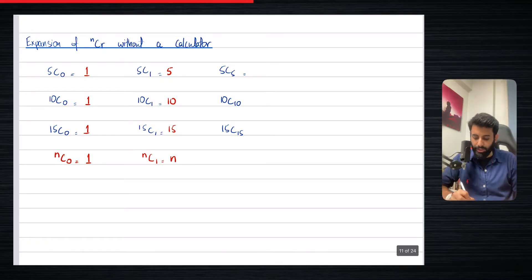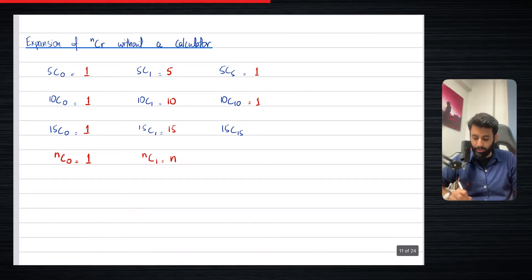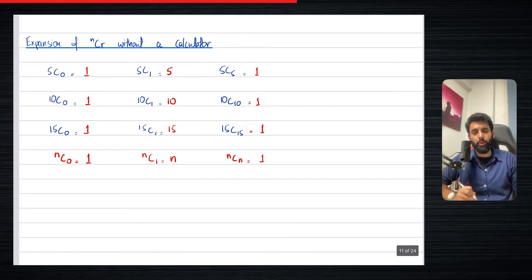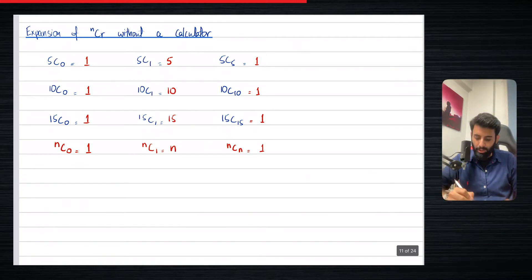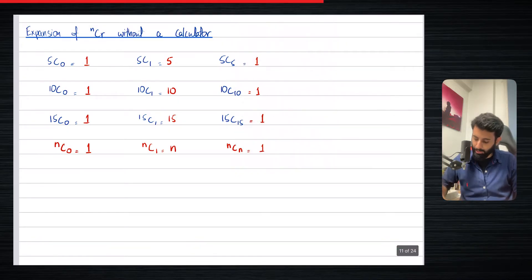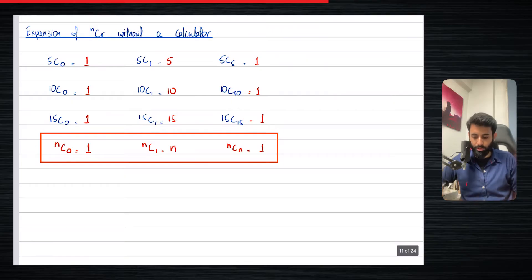If you work out 5C5 using a calculator, the answer is 1. 10C10 is 1 again. 15C15 is 1 also. That means NCN is going to be equal to 1 — so as long as the value before C and the value after C are the same, the answer will be equal to 1. Those are basically the three facts that you should know.